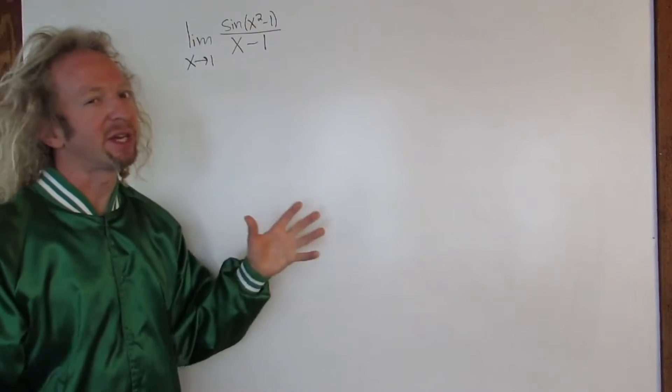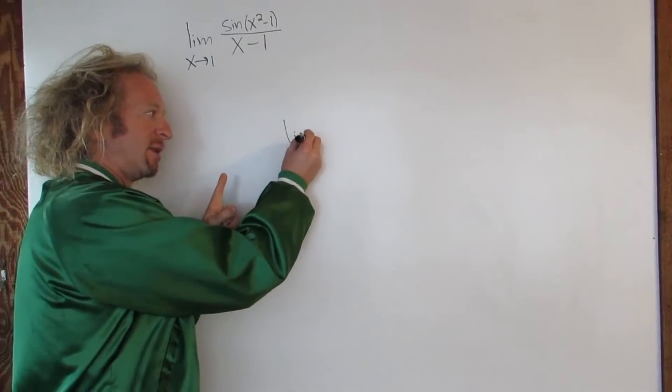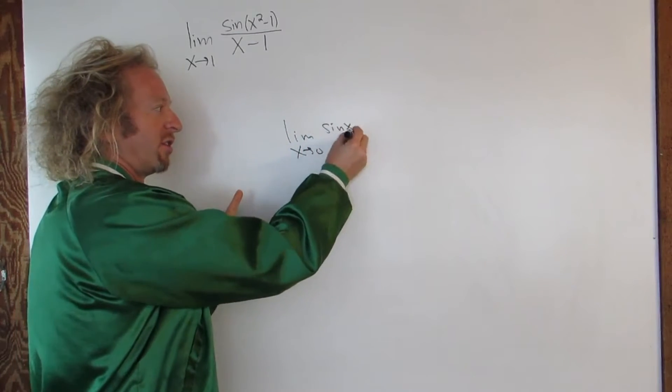So when you see something like this, you should think of another limit. There's another limit. It's the limit as x approaches 0 of sine x over x.